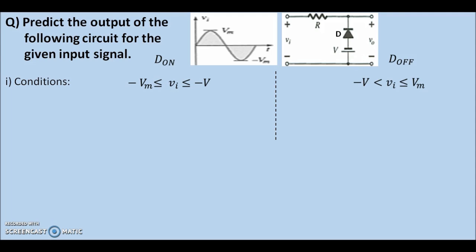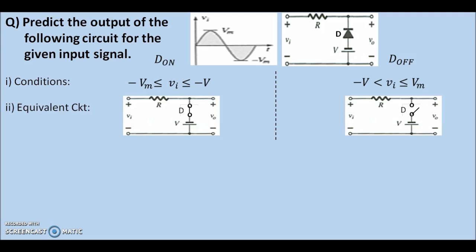Let us now draw the equivalent circuit pertaining to dOn and dOff sides. As you can see, under on condition, diode is represented as closed switch and under off condition, diode is represented as open switch. Now, try to write output side KVL by yourself for dOn and dOff conditions. As you can see from the equivalent circuit, the output voltage under dOn condition would be equal to minus V volts, and for the off condition, it would be equal to input voltage.